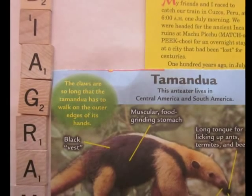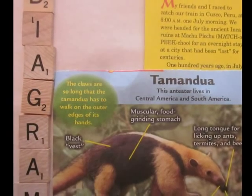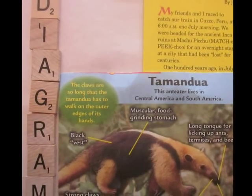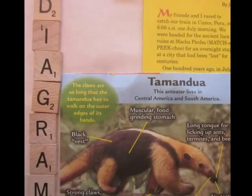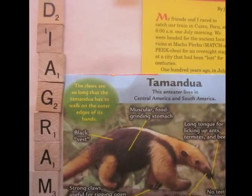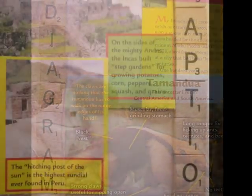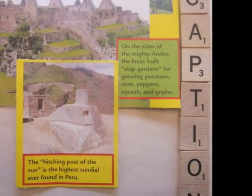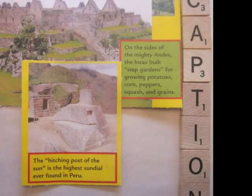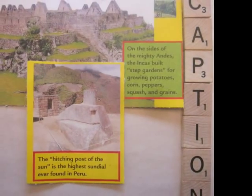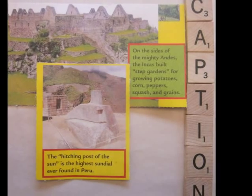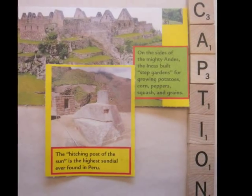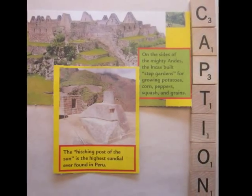Diagrams provide information visually to explain something that may have labels or captions to provide additional details. Captions provide descriptors of a picture, illustration, chart, or diagram that you may find in a non-fiction text.